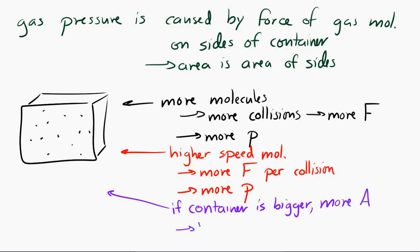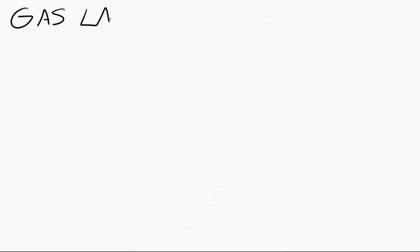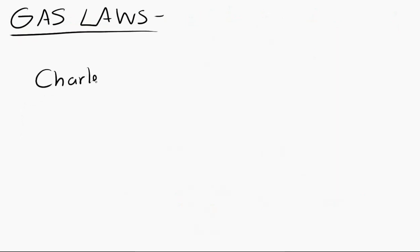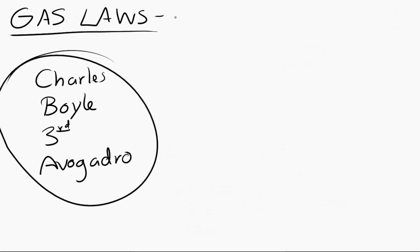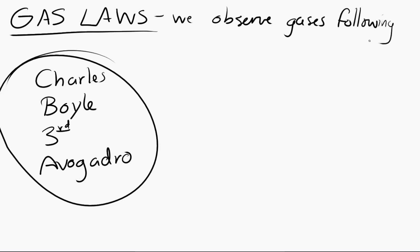Now let's think about what are called the gas laws. We'll look at four of them: Charles's law, Boyle's law, the third law, and Avogadro's law. They are referred to as laws because we observe gases following these relationships. Now it turns out they don't always follow these relationships perfectly, but let's worry about that later.